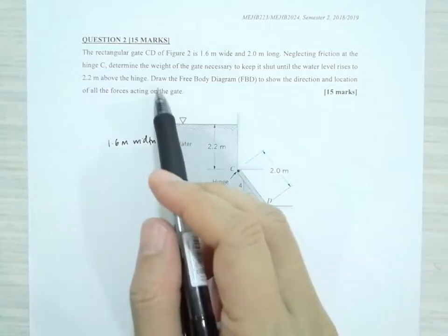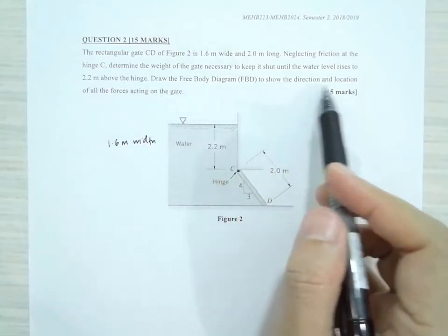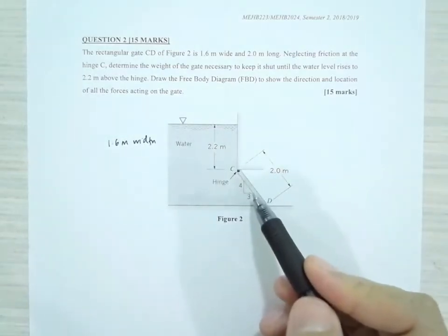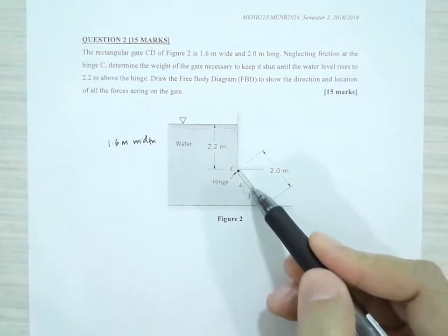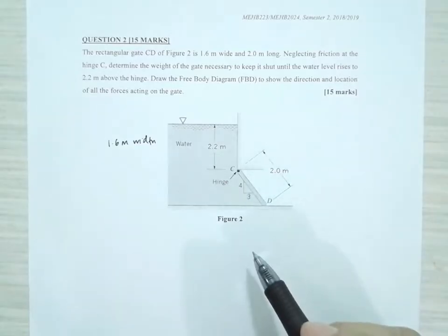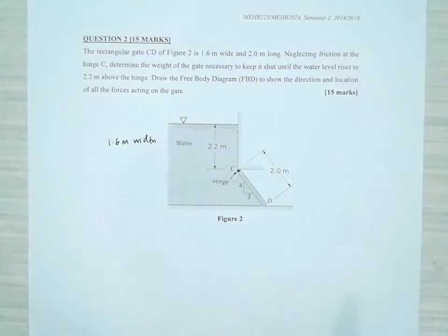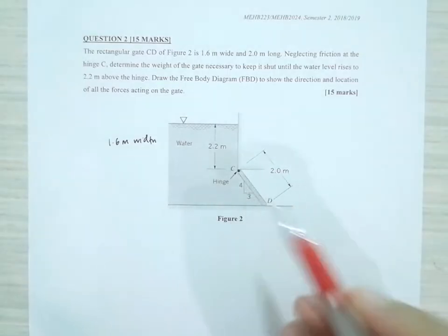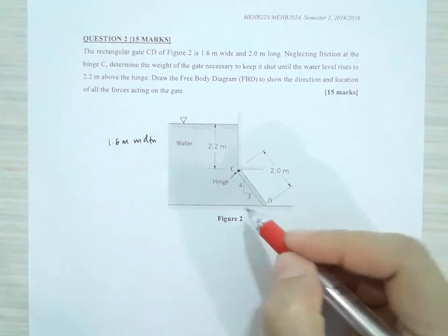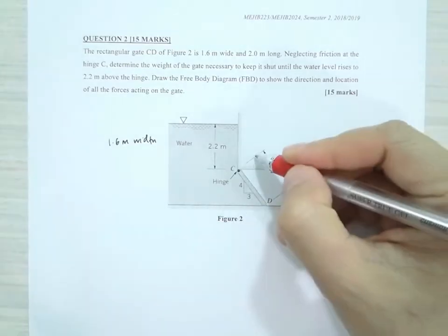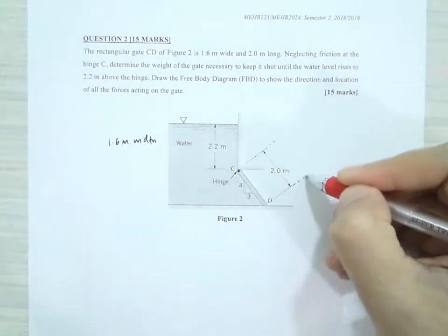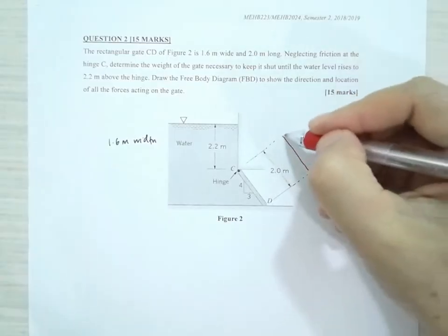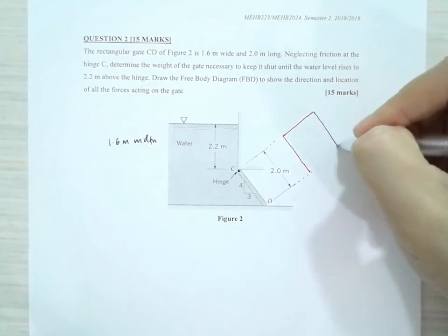You are asked to draw the free body diagram to show the direction and locations of the forces. We need to determine the weight which will be acting at the center of gravity, directly downward. We also need to determine the hydrostatic force acting this way. If you view the gate from here, this is the shape of the gate.